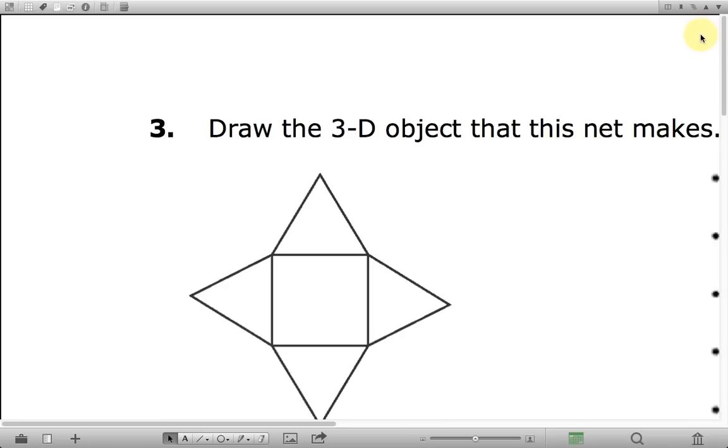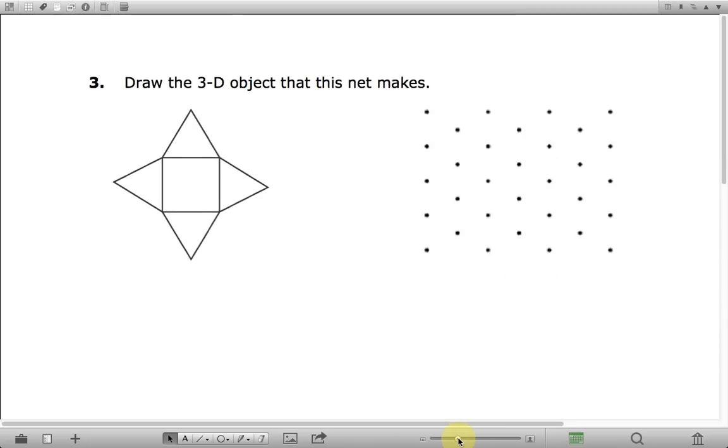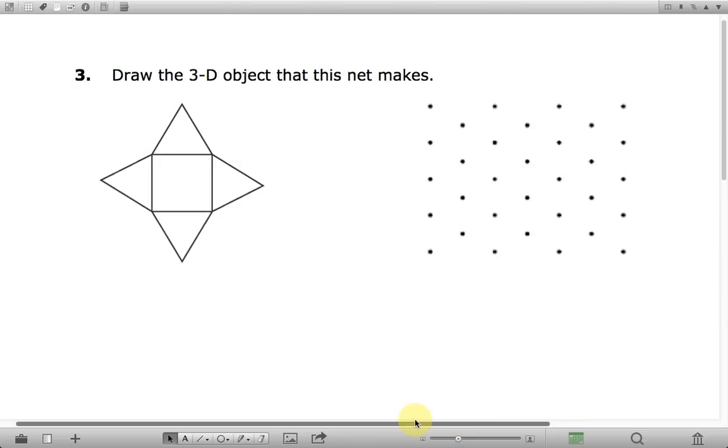So now what if we were given a net and we had to come up with a 3D diagram from that. So we're not given any dimensions here, so we won't worry about the exact size or anything. But if we were to take these flaps here and fold them up and tape it all together, what kind of a 3D object would we make? And so hopefully you can recognize that this is the net of a square based pyramid.